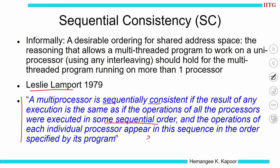There is an arbitrary interleaving — you have a total order with operations coming from across different processes. There is a sequence and all operations happen in this sequence. When you try to understand what operations belonging to a particular process happened, for that process all operations took place in program order. Individual processor actions appear in the sequence specified by its program.